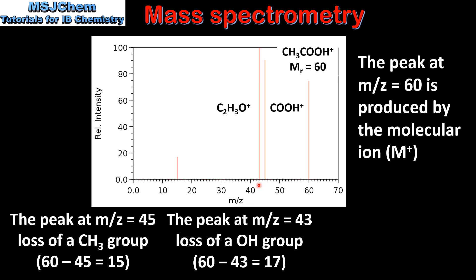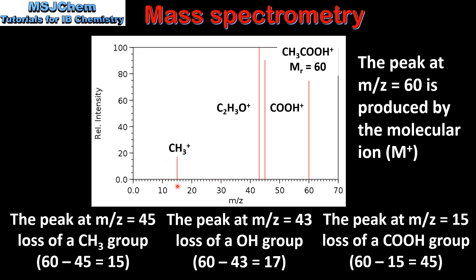The next peak occurs at a mass to charge ratio of 43, representing the fragment C2H3O+. Subtracting 43 from the molecular ion mass to charge ratio of 60 gives 17, which using table 28 corresponds to the loss of an OH group. The final peak on the left occurs at a mass to charge ratio of 15, representing the fragment CH3+. Subtracting 15 from 60 gives 45, which corresponds to the loss of a COOH group.